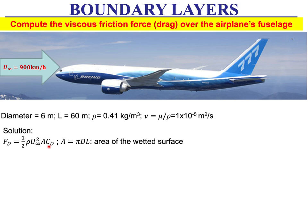At the flying altitude, the density is 0.41 and the kinematic viscosity is 10 to the minus 5 for air. The drag force is half rho u-infinity squared times some area times the drag coefficient. Going back to the previous lecture, we take this cylinder representing the fuselage, cut along one line like a toilet paper roll, and open it up to get a flat plate. The contact area between the air and the fuselage is just pi times d times L — pi-d is the circumference and L is the length.